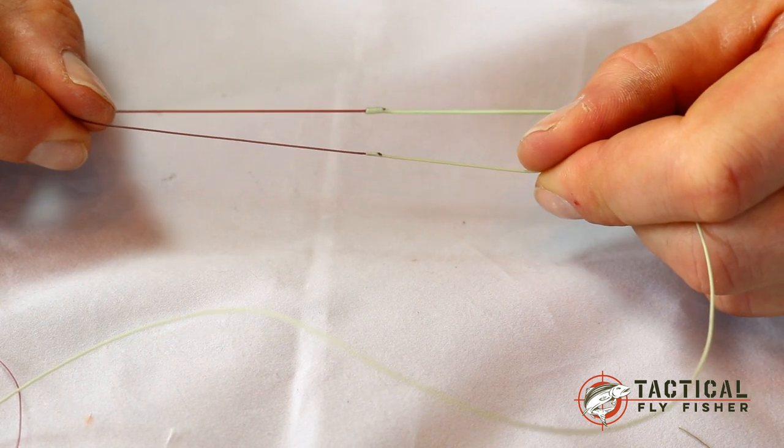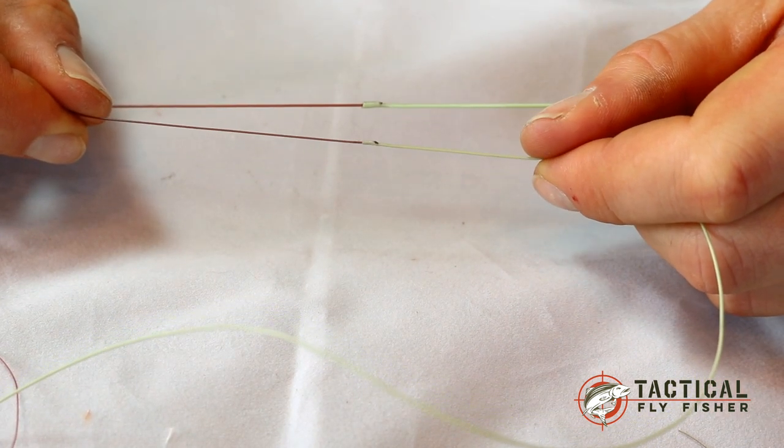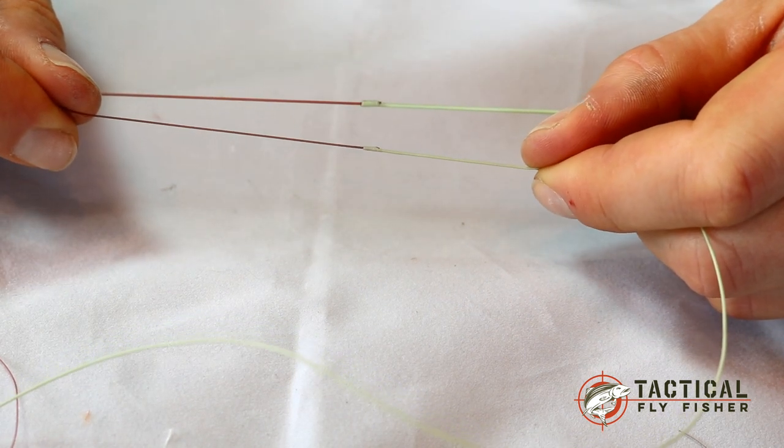Welcome to this tactical fly fisher tutorial. In this tutorial I'm going to be showing you a super glue splice that goes between a leader and a braided core fly line.